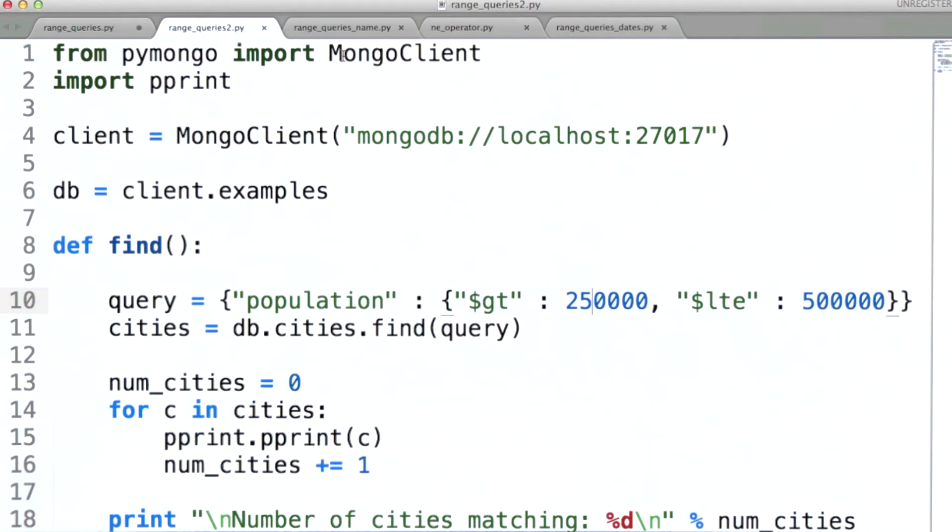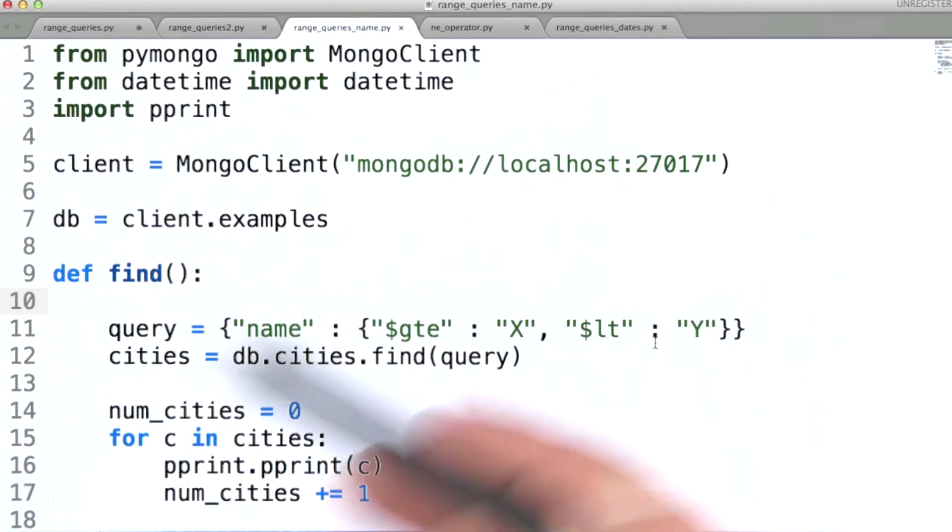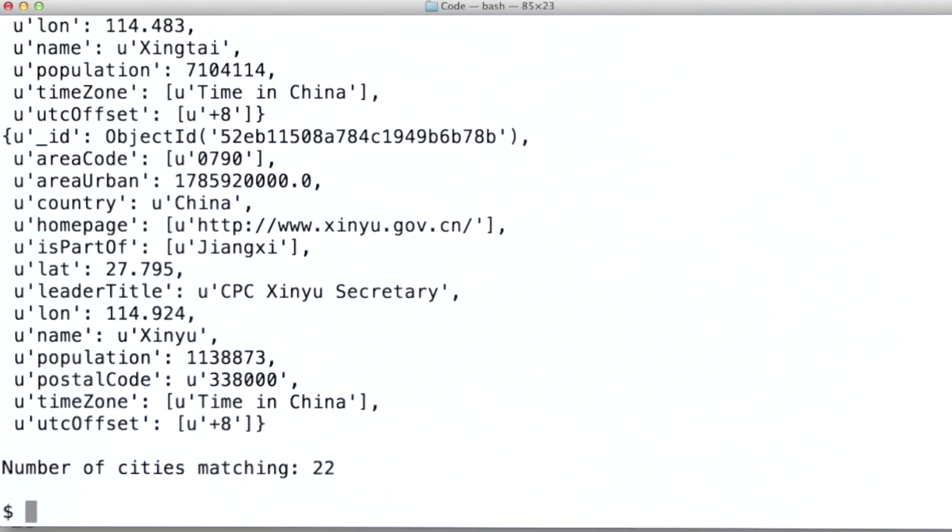This type of range-based query works across many different data types. We can do something similar for strings. Here, the semantics of this range are give us all city names that begin with X. Let's go ahead and run this code. And here we can see that in the results we get back, we're getting back cities that begin with the letter X. Total match of 22 cities out of the 20,000 or so that are in this collection.